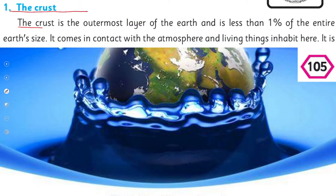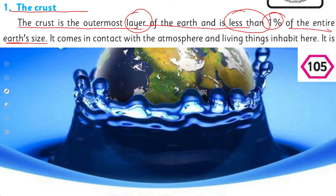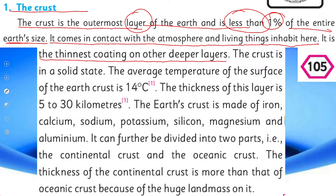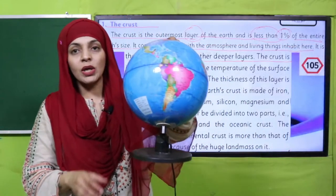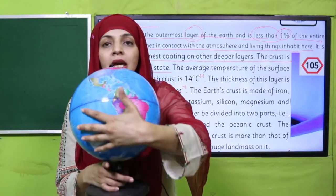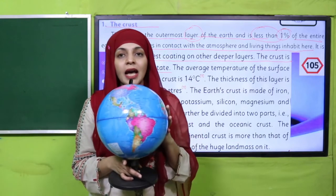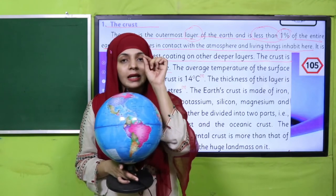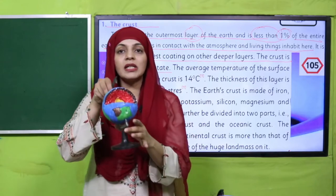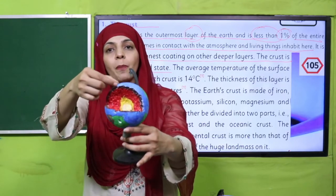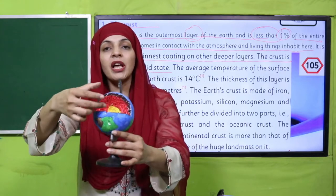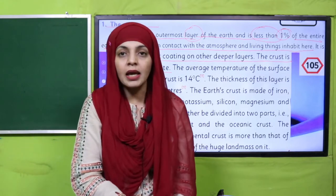Let's study about the crust first. The crust is the outermost layer of the earth and is less than 1% of the entire earth's size. It comes in contact with the atmosphere and living things. It is the thinnest coating on the deeper layers and is in a solid state. Here you can see the earth — this is the full globe. The very outer layer which is 1% of the entire earth, this topmost layer is the thinnest, and the layers below it get thicker.